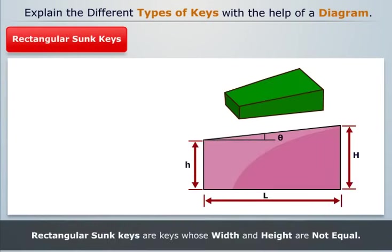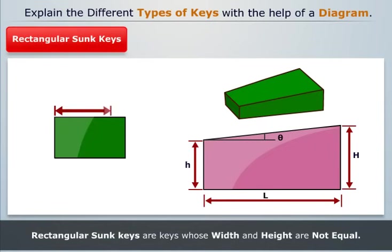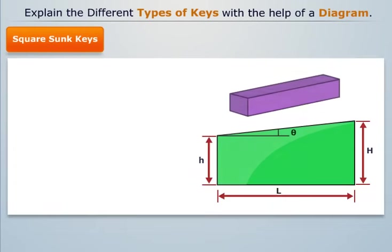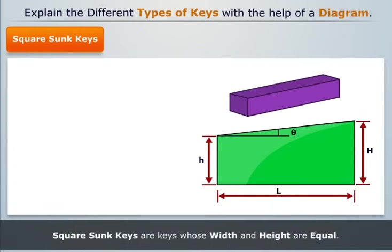Rectangular sunk keys are keys whose width and height are not equal. Square sunk keys are keys whose width and height are equal.